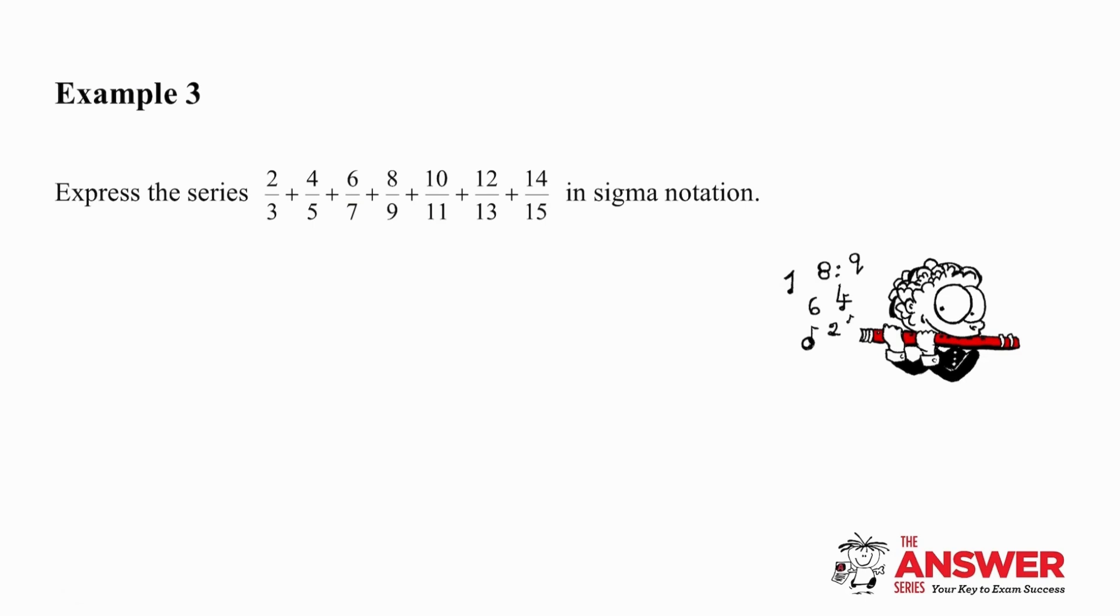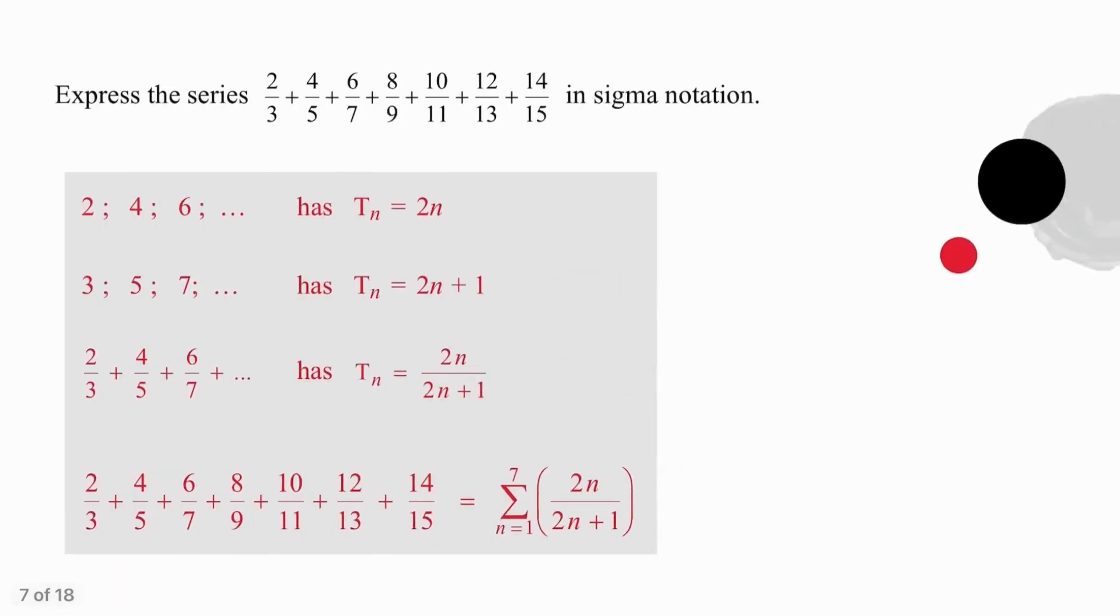This is a fraction question which can be off-putting. It isn't difficult. Pause the video and try it on your own. If it helps, you can separate the numerators and the denominators into separate sequences initially. The numerators are even numbers, generated by the formula 2n. The denominators are odd numbers, generated by the formula 2n plus 1. It's worth noticing that the denominator in each of these statements is simply one more than the numerator, so it could be done very easily by simply stating 2n over 2n plus 1 by inspection.